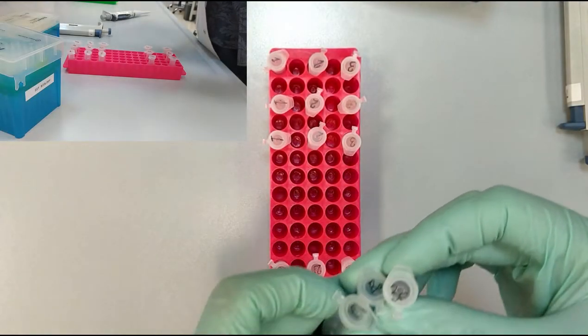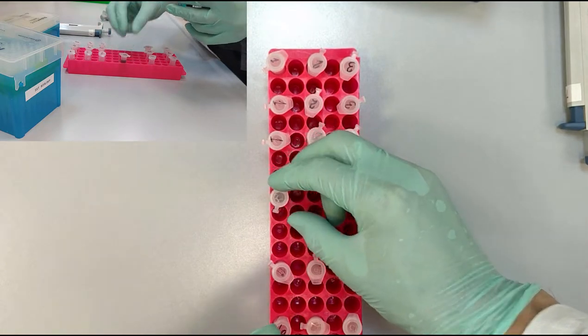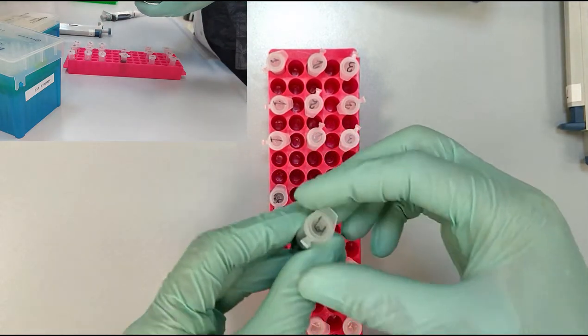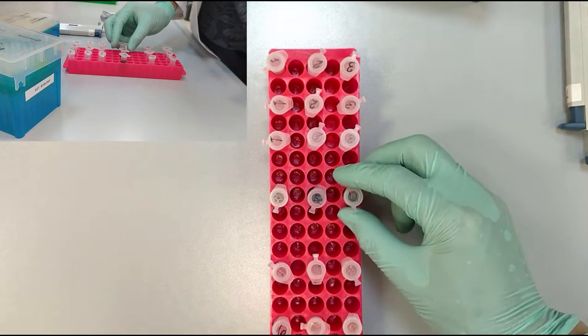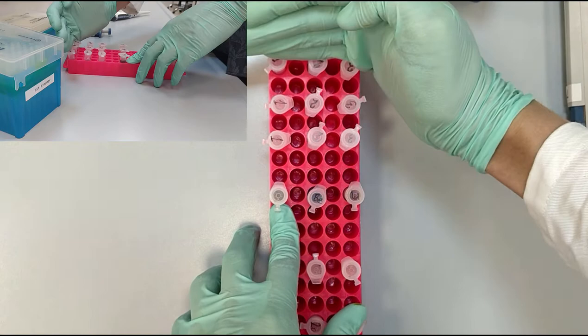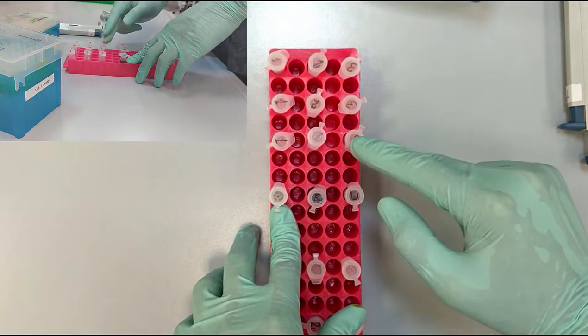Okay, so here we have the solutions of Bradford, Benedict, and iodine. What we are going to do is add Bradford to the first row, Benedict to the second, and iodine to the third.